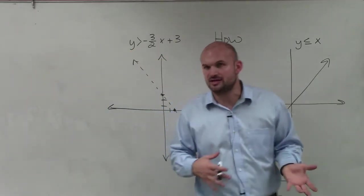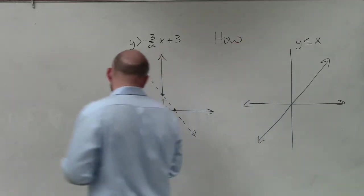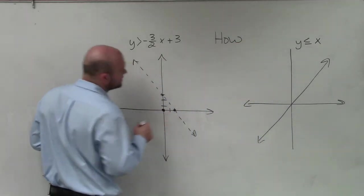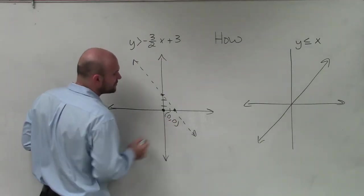When determining the shading of an inequality, we need to determine a test point. The best test point to ever pick is (0,0), as long as your graph does not go through that point.